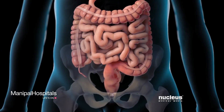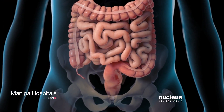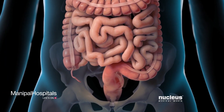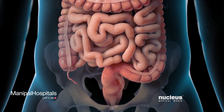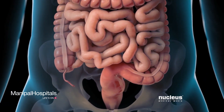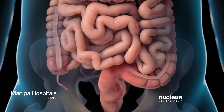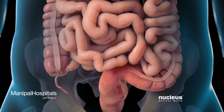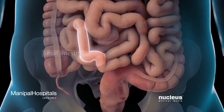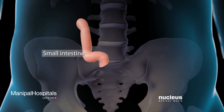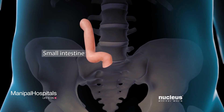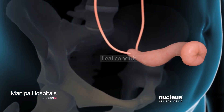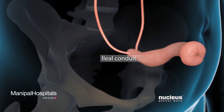Since your bladder has been removed, your surgeon will need to reconstruct a new pathway for you to pass urine from your body. Your surgeon will create this new path using a section of your small intestine in one of three ways.